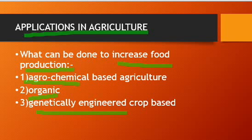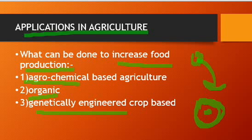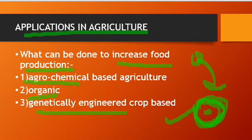The third type is genetically engineered crop-based system. It means that we are going to engineer the particular crop — we change it genetically. We introduce a particular gene of interest or genetic element into the plant's cell. After that gene is introduced, the plant is now genetically modified, and all the cells of that plant will have the desired character.